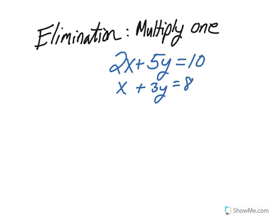Today we're going to look at elimination by multiplying one equation by a number in order to get the coefficients of two variables to be the same. Let's take a look at the following two equations.